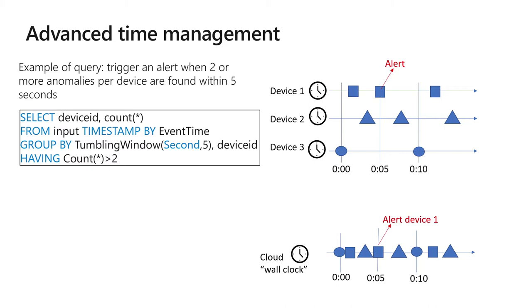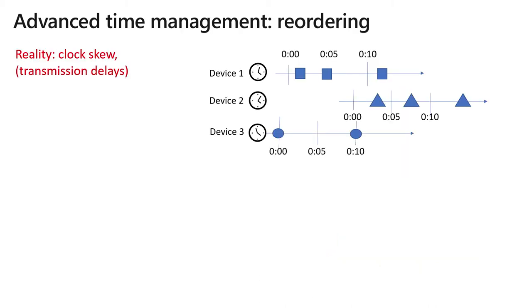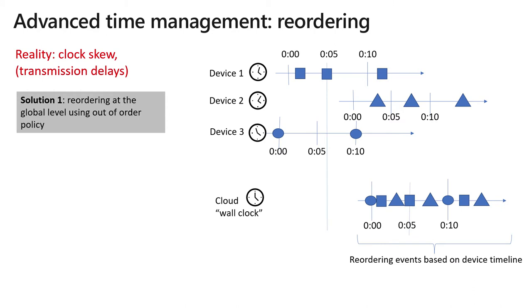But of course, that never happens. What happens instead of having this nice aligned clock is you have this time skew, and basically all the devices send their data at their own pace. If you want to make any decision, you have to reorder these events, which means you have to wait for the events.